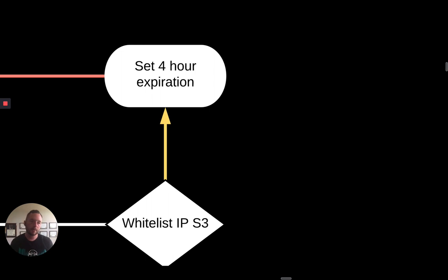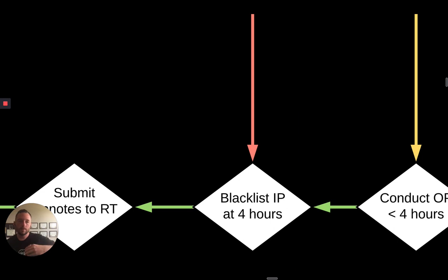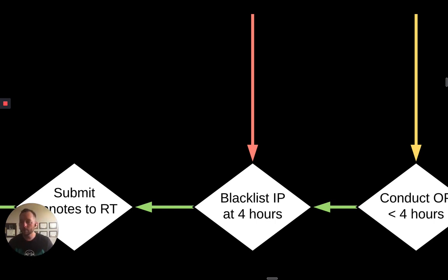So you give it to them and say: 'Hey, at 10 o'clock I need you to pull down this package and get ready to go. It's going to have your SSH keys to get into your ops box. Here's your target. Have fun.' They download the target package from S3, connect to the host, and conduct their op for four hours. They're probably going to make a whole hell of a lot of noise and set off a lot of alarms. At the end of four hours, automation kicks in — their whitelisted IP gets removed from the security group and they lose access to the box. The op is over.